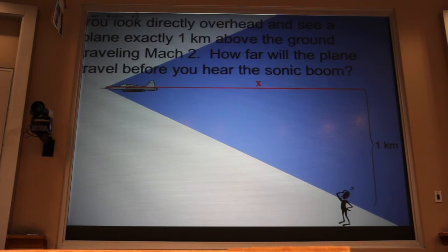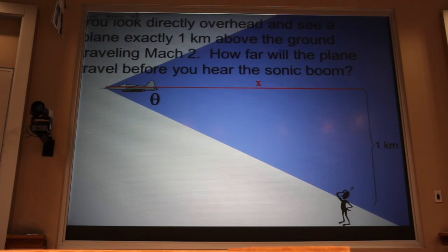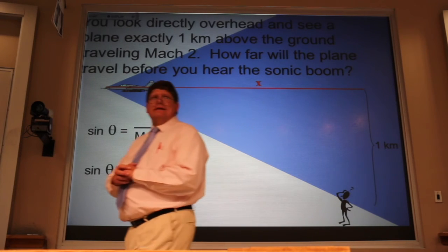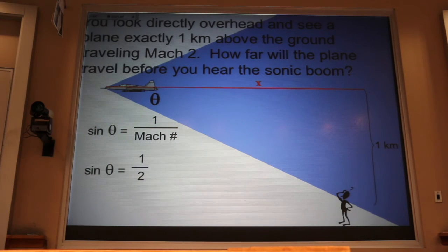Here's the correct way to solve the problem. The first thing you do is look for that Mach cone angle, or half cone angle. Now, I'm told that the plane is traveling Mach 2. So that means one over the Mach number is one half. Does anyone know the angle whose sine is equal to a half? Thirty degrees.